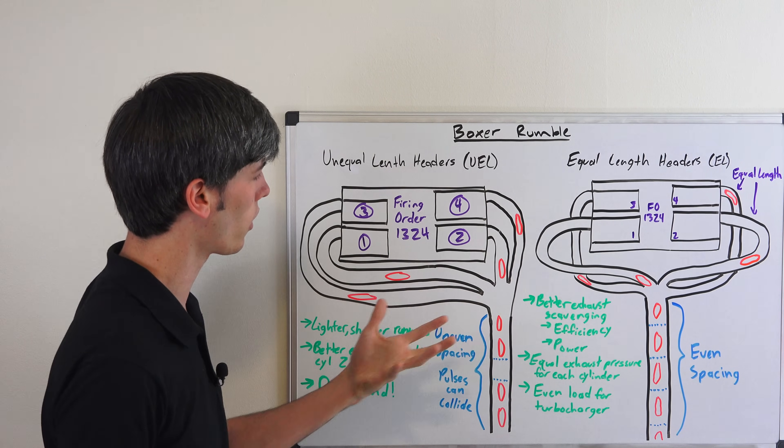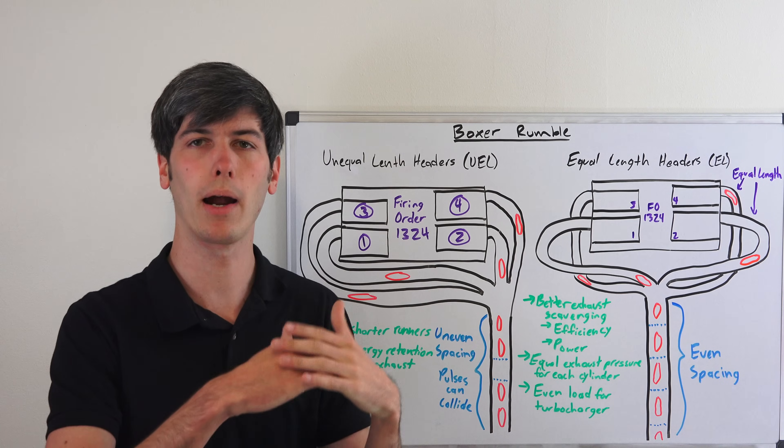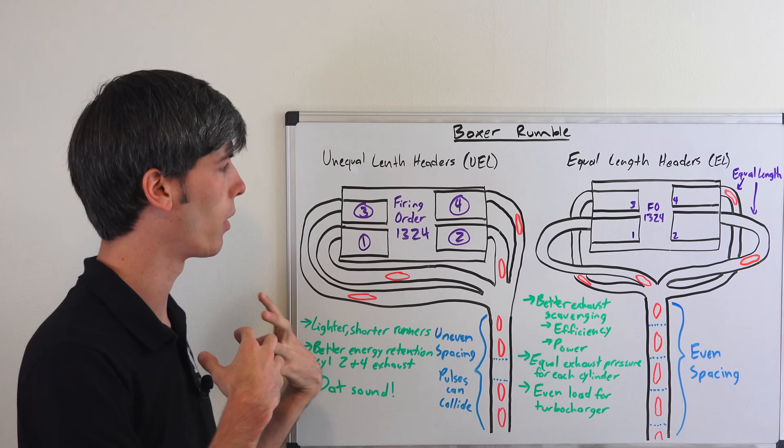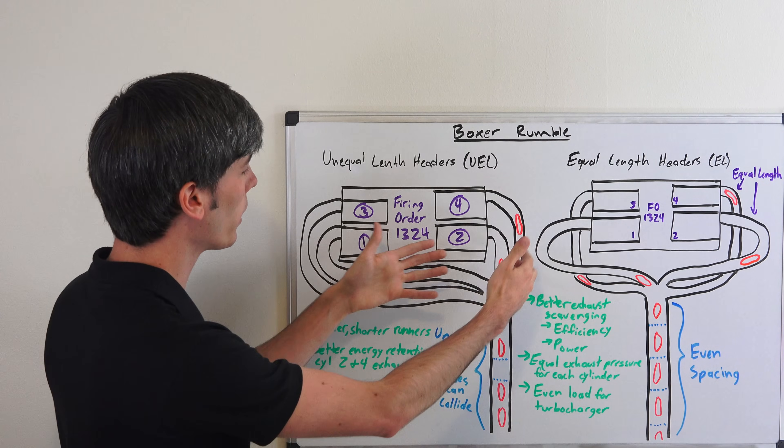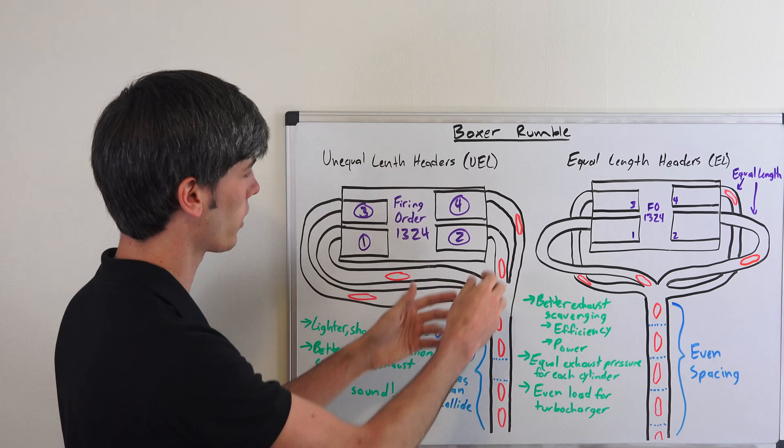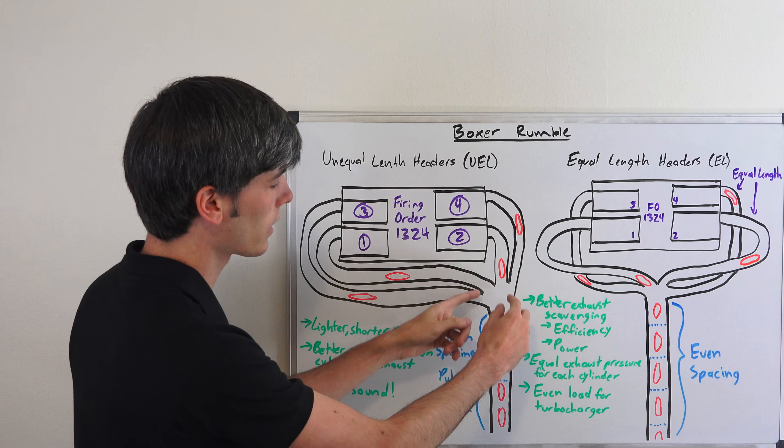What I've drawn here in red are the exhaust pulses. Basically after your power stroke, once that exhaust valve opens up, you're going to have a pulse of exhaust coming out, a high pressure front of exhaust which I've drawn here as pulses traveling through the exhaust. These are going to collect into a single pipe and then travel towards the rear of the vehicle.